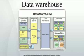Generic data warehouse environment. The environment for data warehouses and marts includes the following: source systems that provide data to the warehouse or mart; data integration technology and processes that are needed to prepare the data for use; different architectures for storing data in an organization's data warehouse or data marts; different tools and applications for the variety of users; metadata, data quality, and governance processes must be in place to ensure that the warehouse or mart meets its purposes. Rainer states that a common source for the data in data warehouses is the company's operational databases, which can be relational databases.